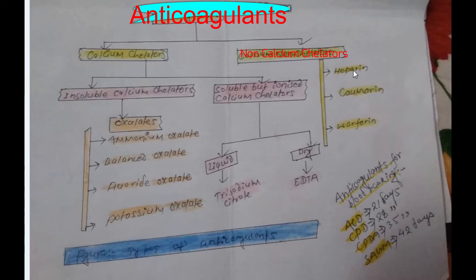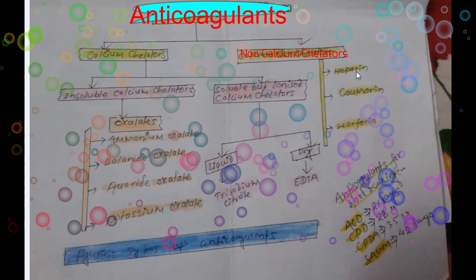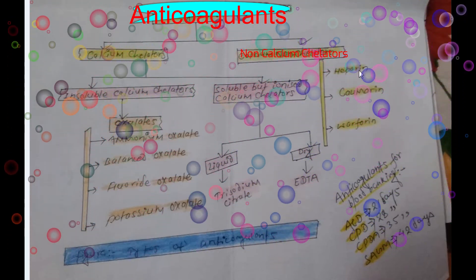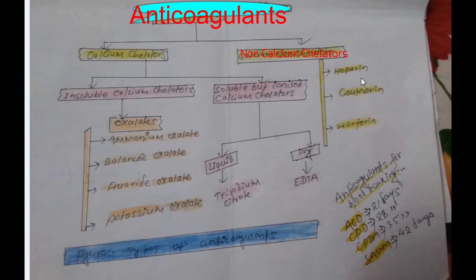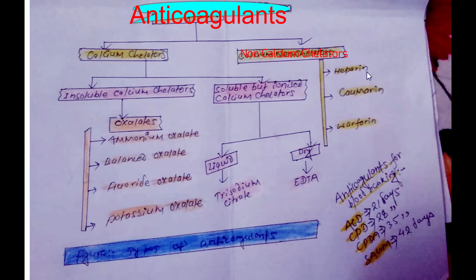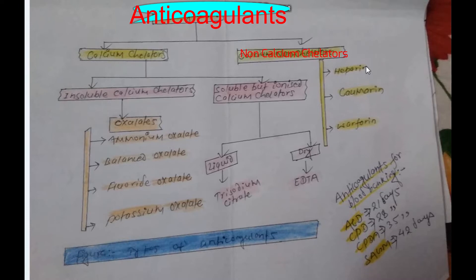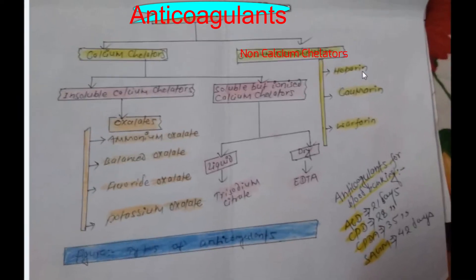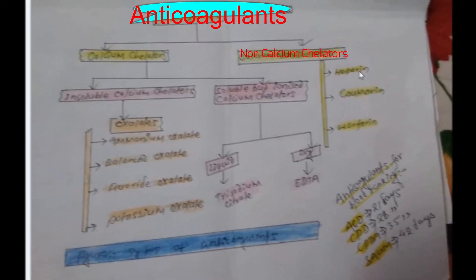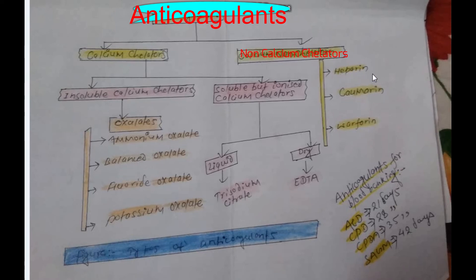Now about heparin: it is a mucopolysaccharide polysulfuric acid, normally present in blood in a small amount. Concentration is 0.1 to 0.2 mg per ml, or 10 to 20 international units per ml. Its uses include being the best anticoagulant for osmotic fragility test, acting as an instantaneous anticoagulant, and being used during open heart surgery. Heparin can be neutralized by protamine.